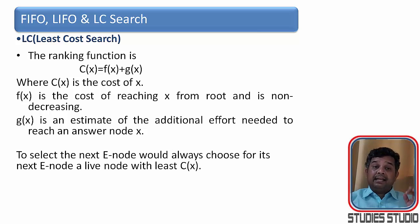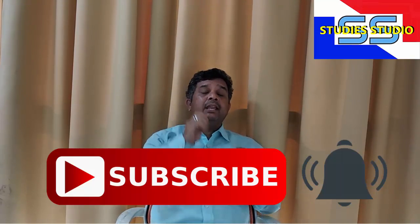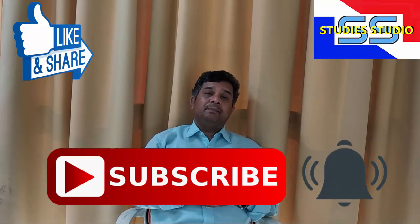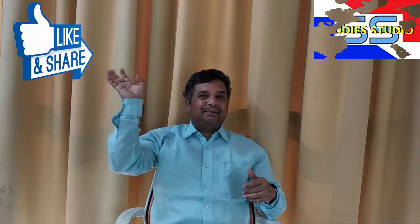To select the next E-node, we would always choose for its next E-node, a live node with least cost. I hope you understood the different techniques how we search in a branch and bound technique. I hope you understood this. If you understood, give me a like and share among your friends. In our next video, we are going to take an application by using any of this searching technique and solve the problem. See you then. Take care. Bye.